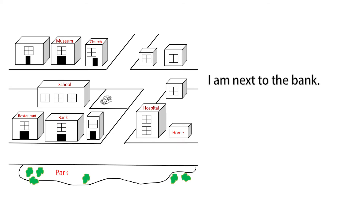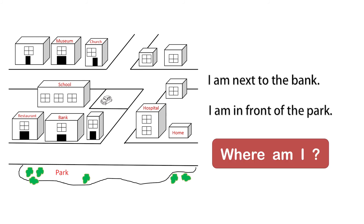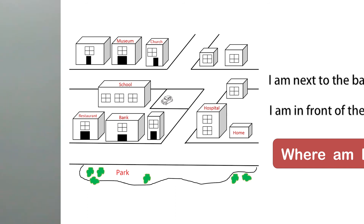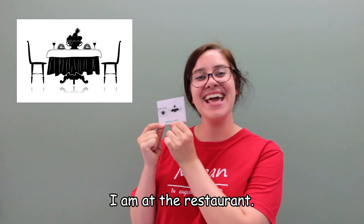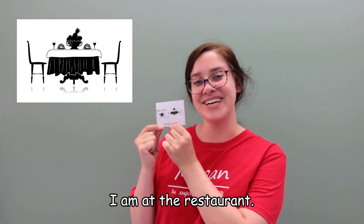I am at the park. I am next to the bank. I am in front of the park. Where am I? Restaurant — I am at the restaurant.